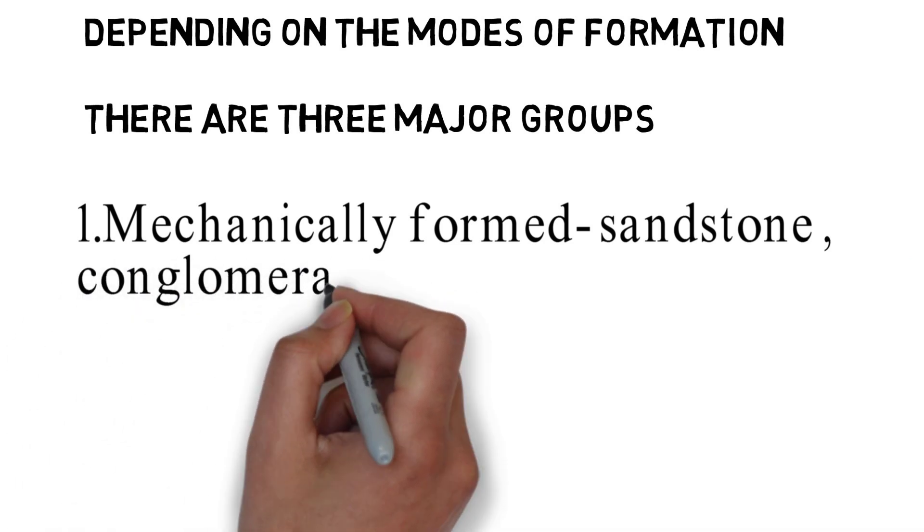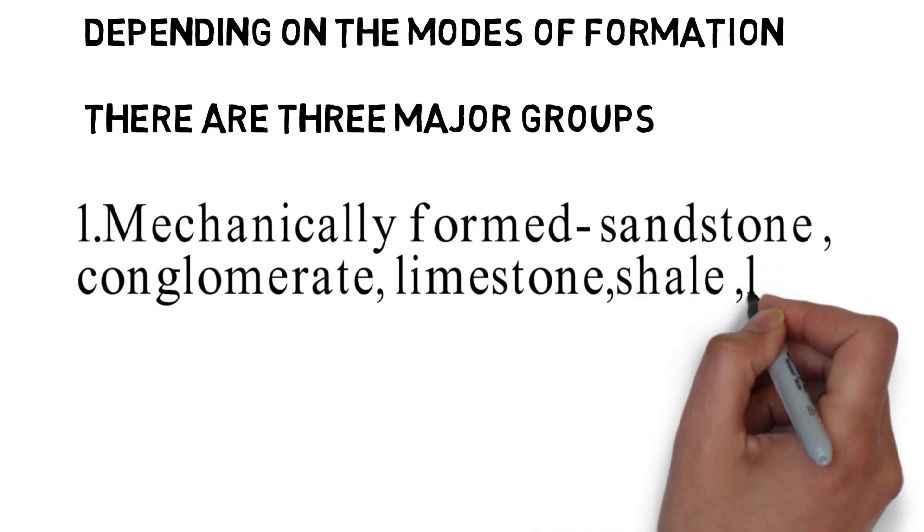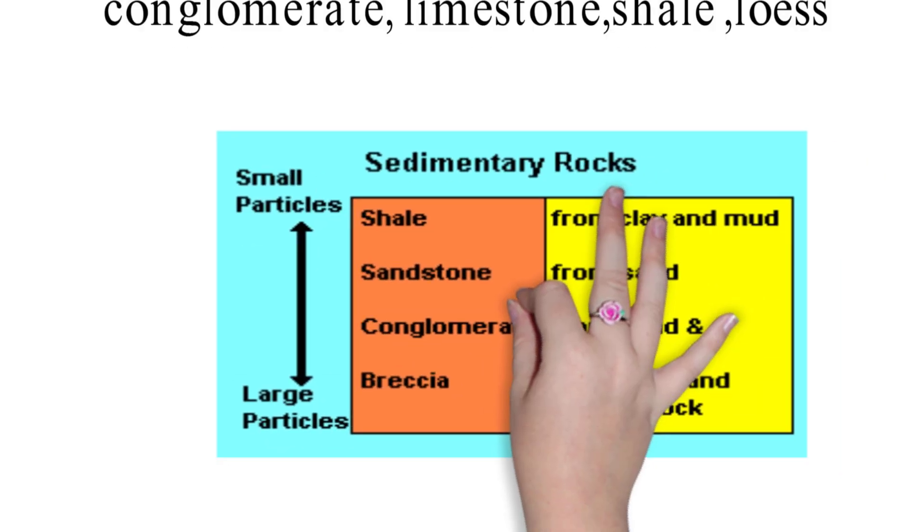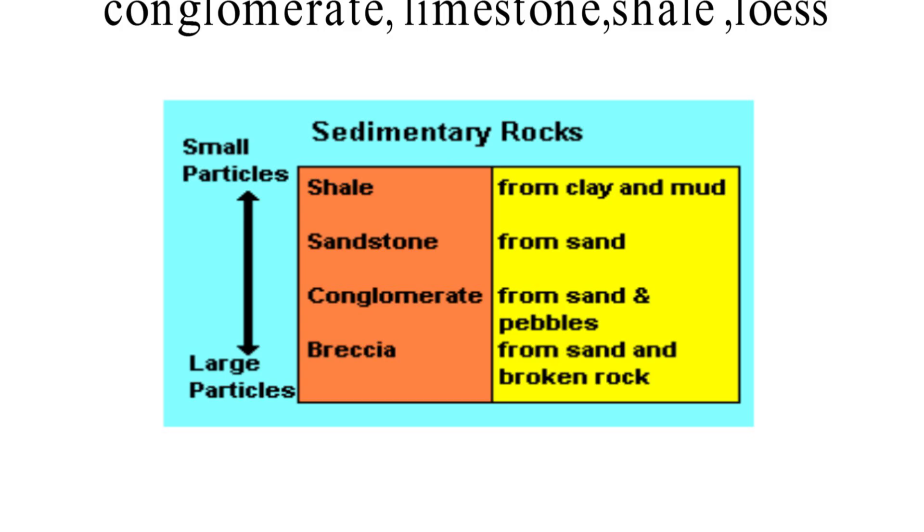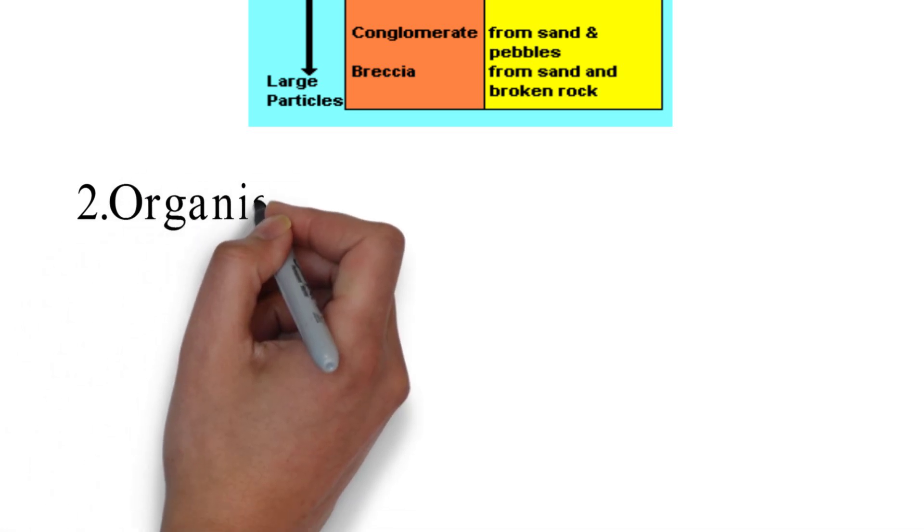In this diagram you can see how from different particles, different sizes of particles, different forms of rocks are formed. From clay and mud, shale is formed. From sand, sandstone is formed. From sand and pebbles, conglomerate is formed. From sand and broken rock, breccia is formed. In this diagram I have represented the shale, sandstone, conglomerate, and breccia in terms of their increasing size.